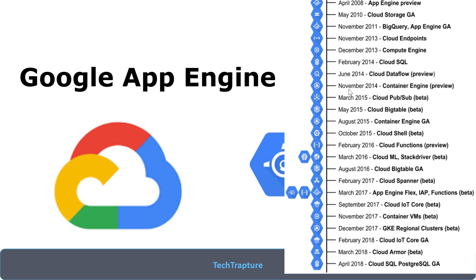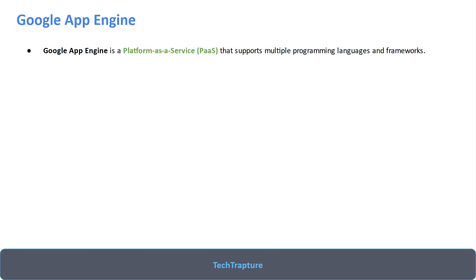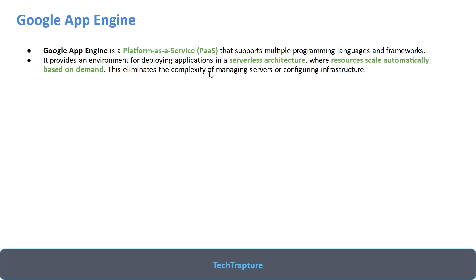Google App Engine is a Platform as a Service provided by Google Cloud which supports multiple languages and frameworks. Google Compute Engine was Infrastructure as a Service where we used Google's infrastructure to create virtual machines, but App Engine is a Platform as a Service — that distinction is important. It is fully managed by Google and provides an environment for deploying applications with a serverless architecture.